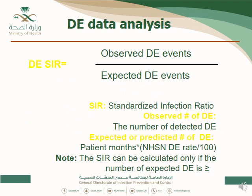The dialysis event SIR is calculated as observed events divided by expected events from a benchmark. If SIR is greater than 1, your dialysis event rate exceeds the benchmark. If equal to 1, it matches the benchmark. If less than 1, your rate is below the benchmark. Benchmarks can be internal (intra-facility comparison over time) or external (MOH, GCC, or NHSN benchmarks).